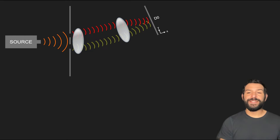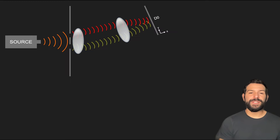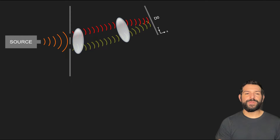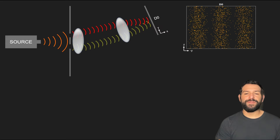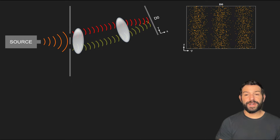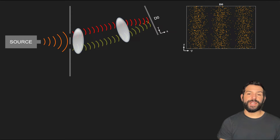So in essence, this is identical to the double-slit experiment we described in a previous video, which will produce the build-up of an interference pattern as more and more particles hit the screen. All we've done so far is move the screen from being right in front of the plate to a different location.